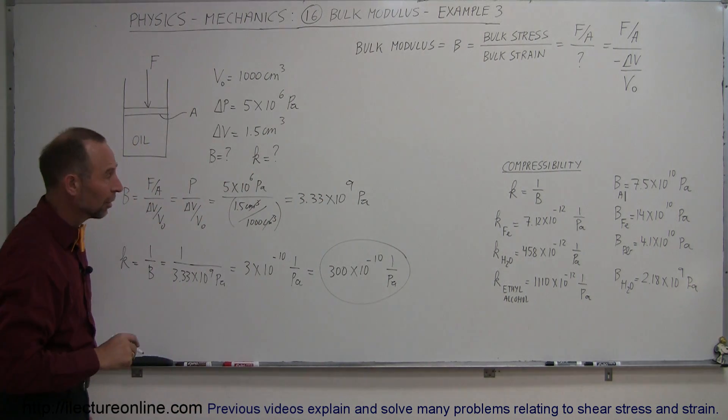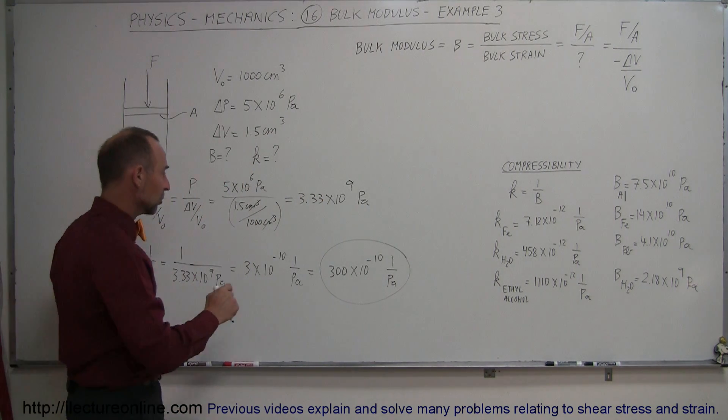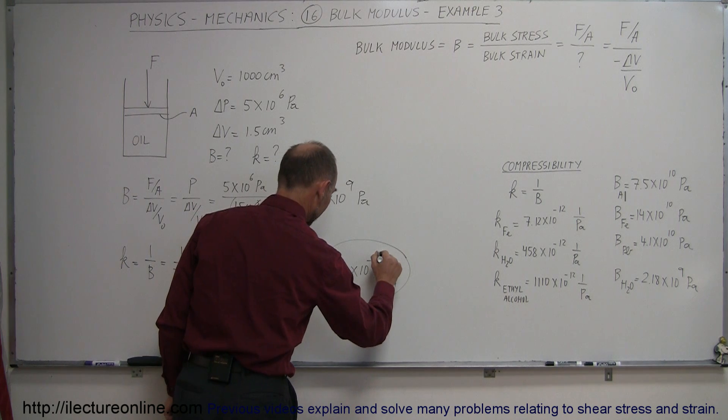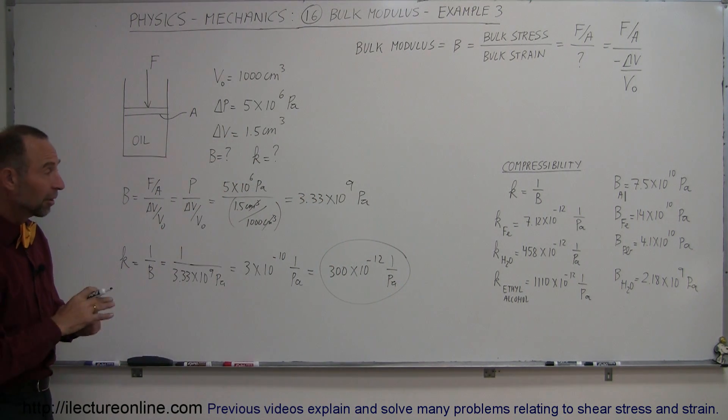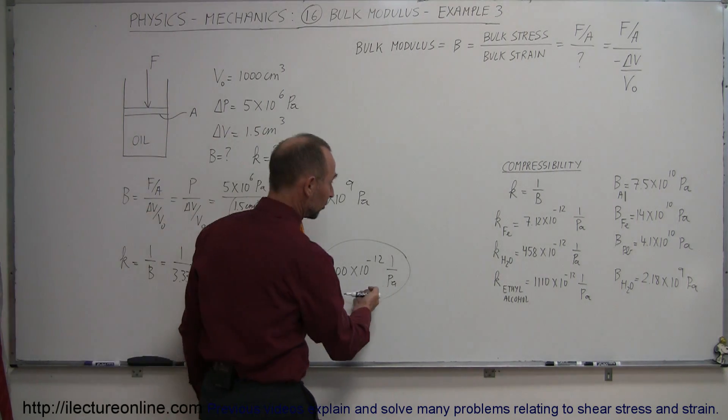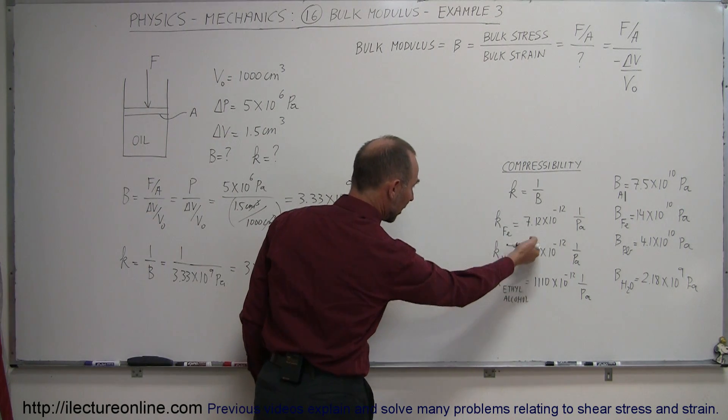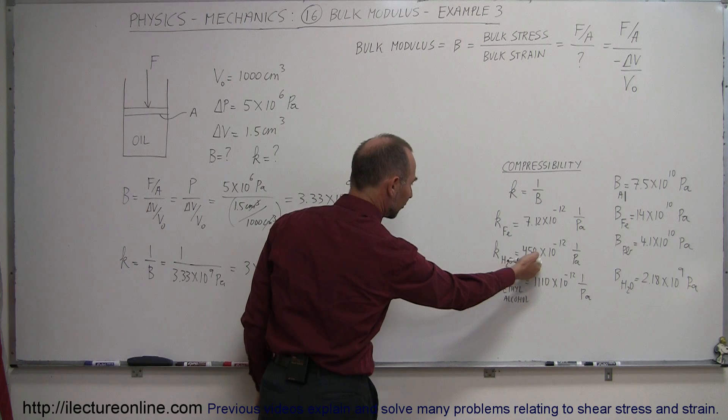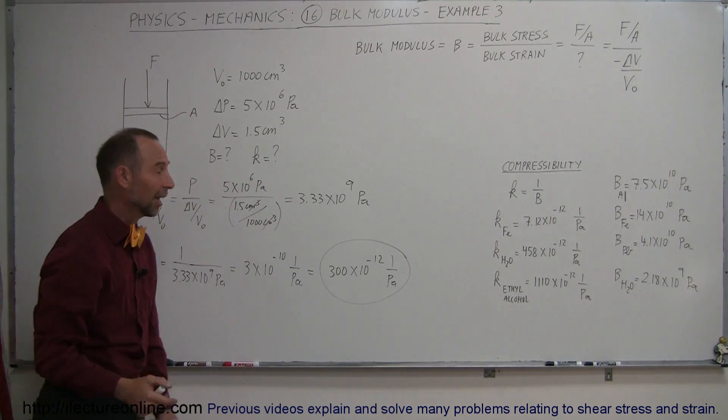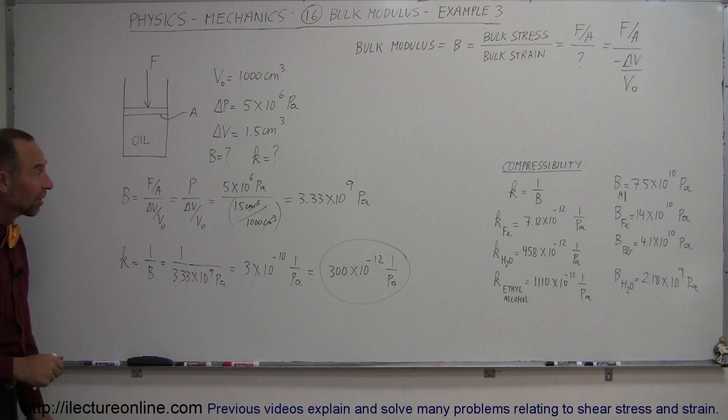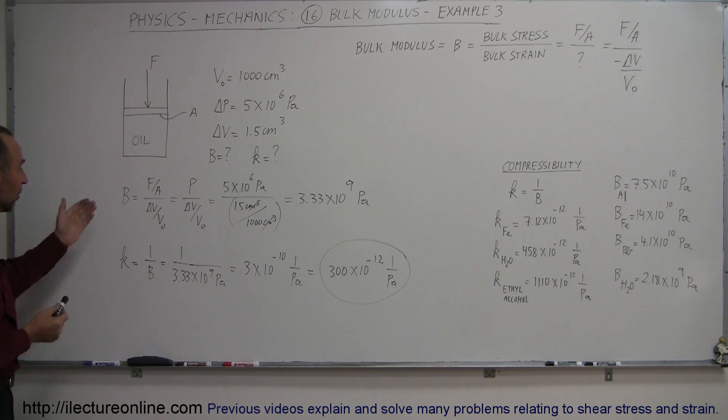Which means the bigger that number, the easier it is to compress the material. So it flips right in here, a little bit less compressible than water, far less compressible than ethyl alcohol, but much more compressible than iron, as an example. So here's a simple example to show you how to calculate the bulk modulus or the compressibility of a material.